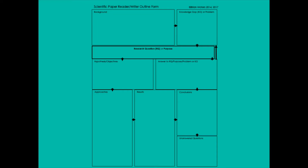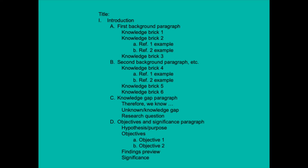You have this form as a downloadable in your course materials. Moving out of graphical representations, another way you can look at the structure of a scientific journal article is by using a classic outline, structured with Roman numerals and then broken down by A's and B's.